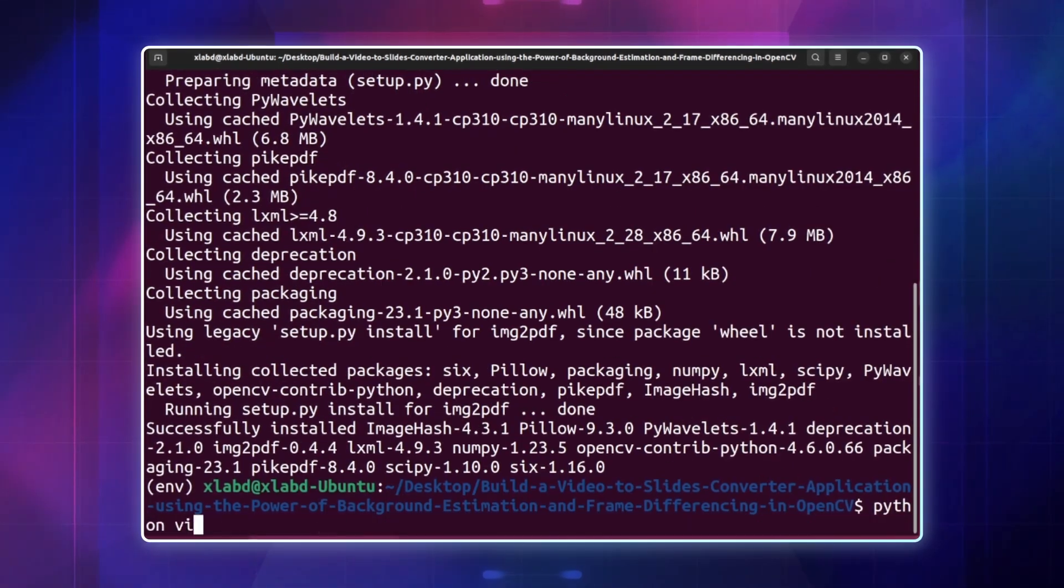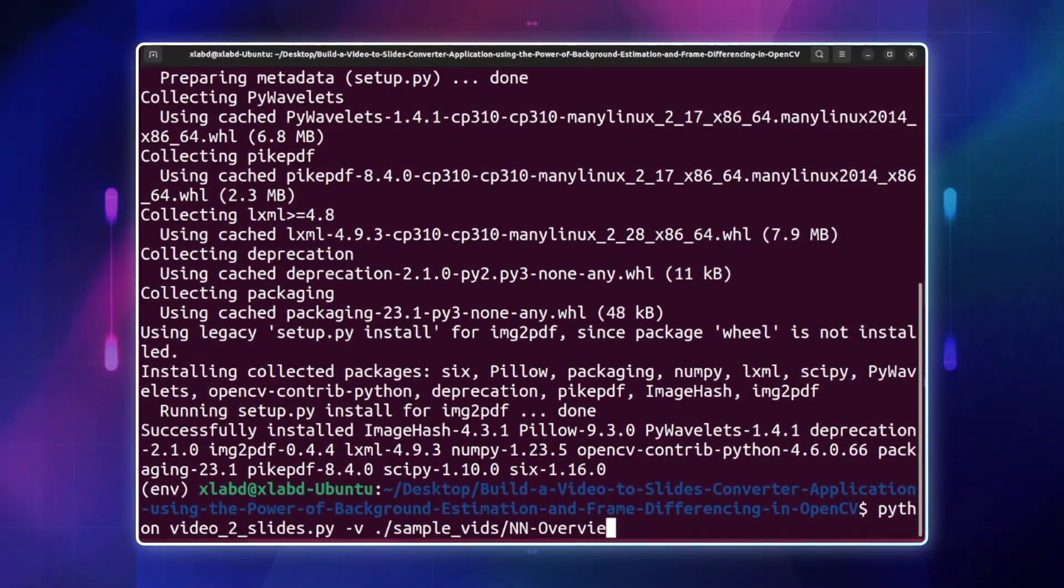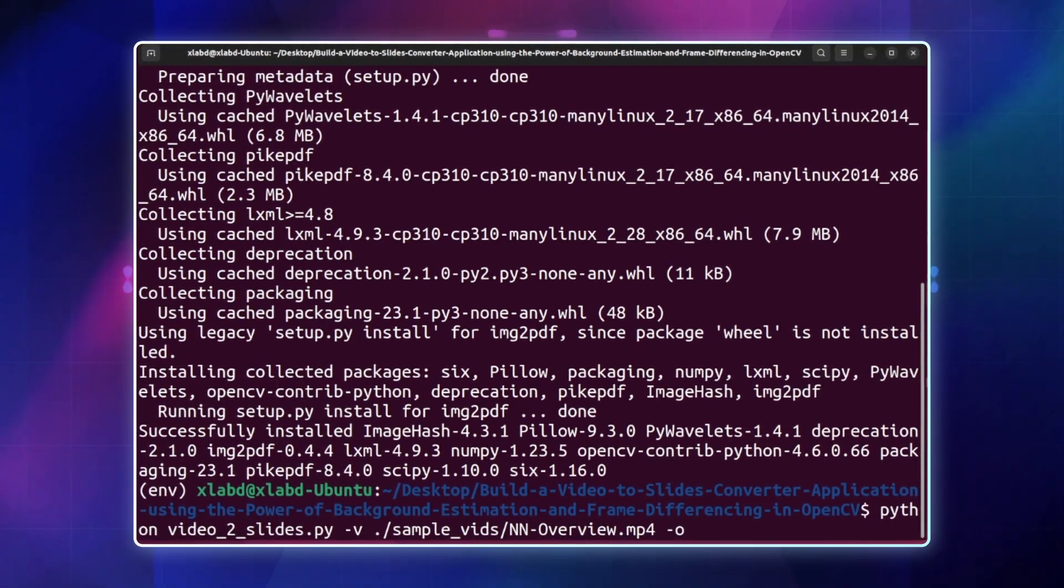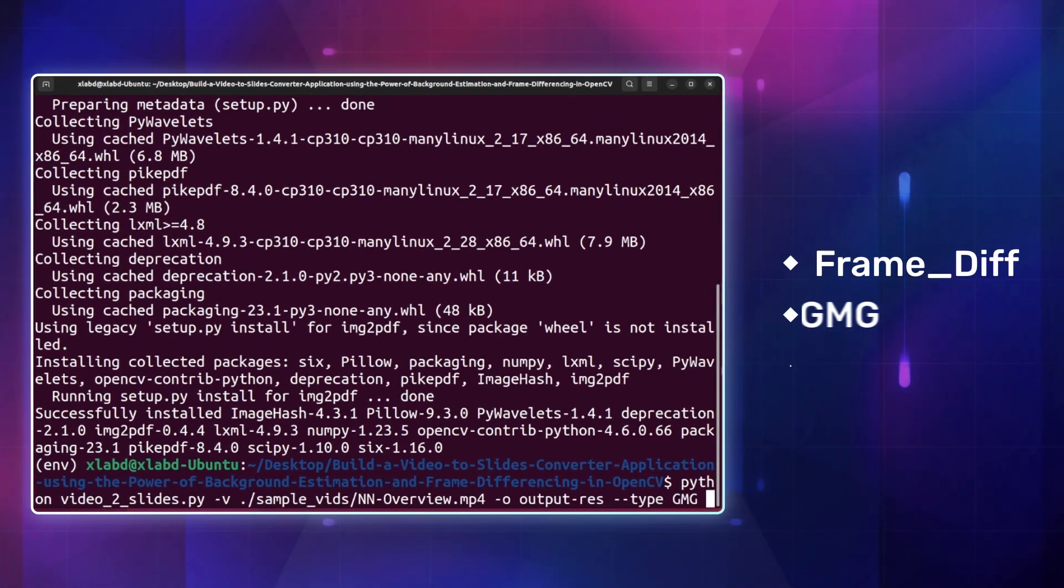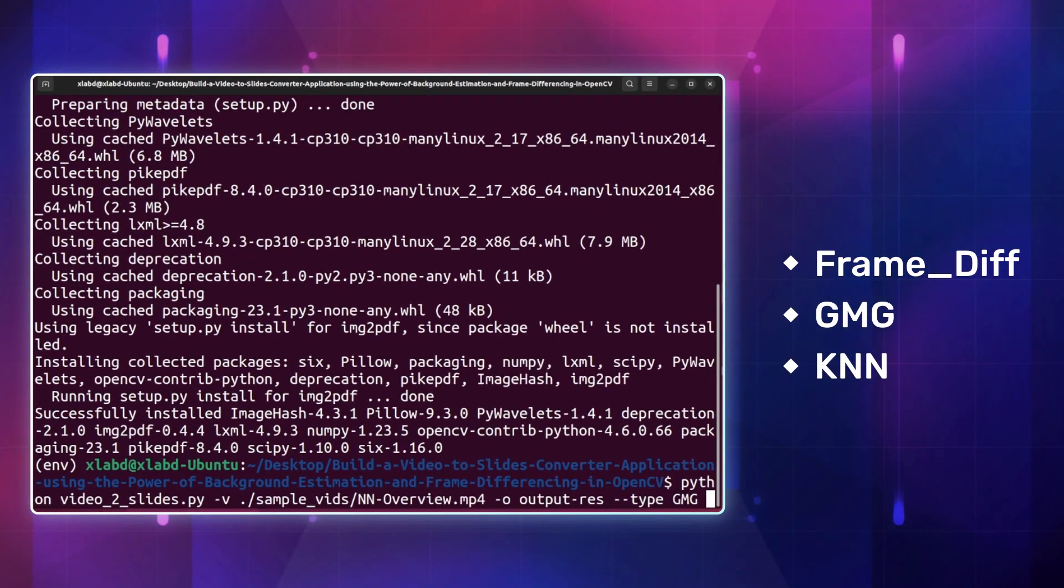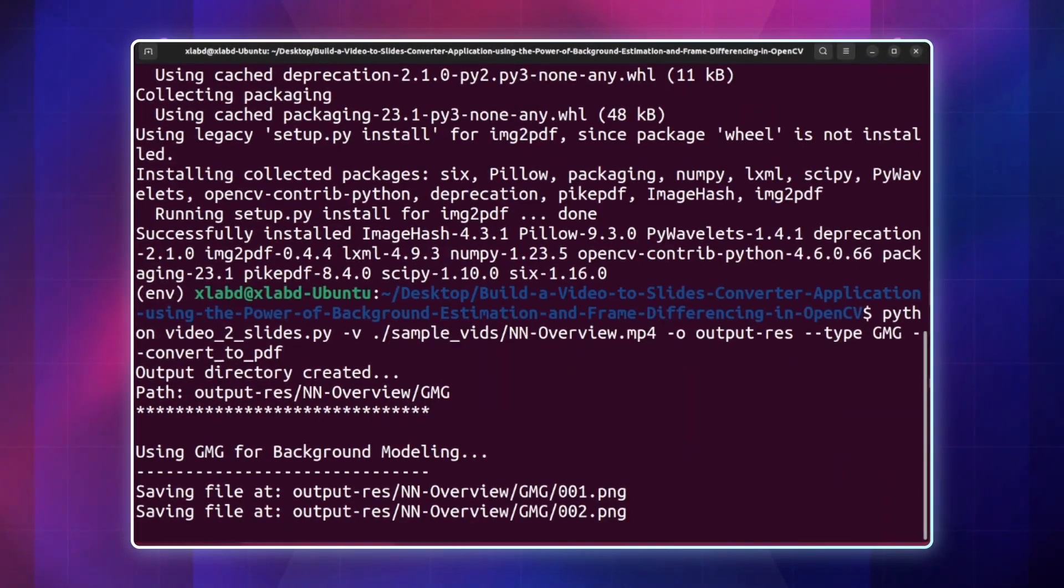Now run the Python script video2slides.py. The V flag inputs the path to the video file. O flag inputs the path to the output directory. Type takes input of frameDiff, GMG or KNN where the default is GMG and convert to PDF does as it says.